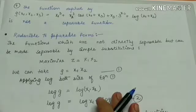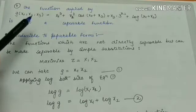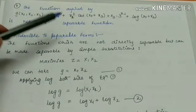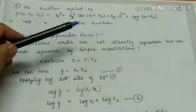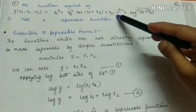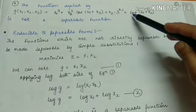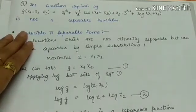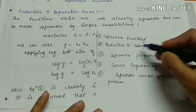A fourth example: g(x1, x2, x3) = x1³ + x2² · cos(x1 + x3) + x3 · 3^(x2) + log(x1 + x2). If you look carefully, this function is not separable because we cannot write it as a sum of linear functions of single variables. Such functions are not separable functions.